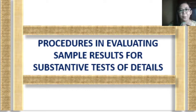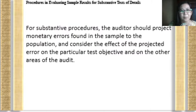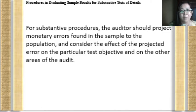For this video lecture, we will be discussing the procedures in evaluating sample results for substantive tests of details. For substantive procedures, the auditor should project monetary errors found in the sample to the population, and also consider the effect of the projected error on the particular test objective and on other areas of the audit as well.